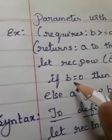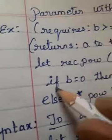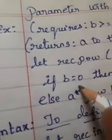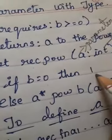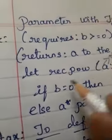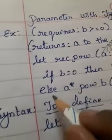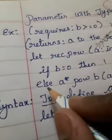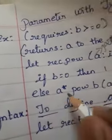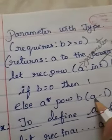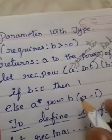The next line: if b = 0, that is the condition. If b = 0 then it returns the value 1. If b is not equal to 0, this condition becomes false and it moves to the else condition: a * pow (a, b minus 1).